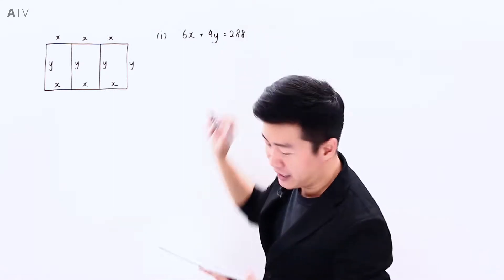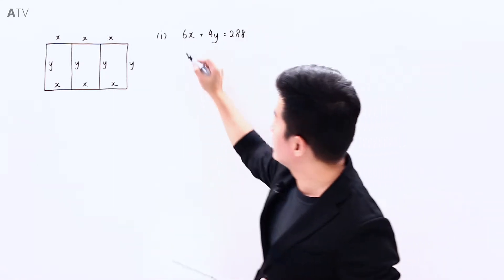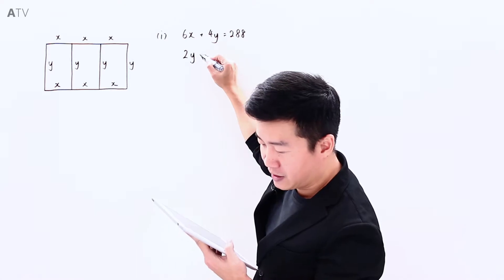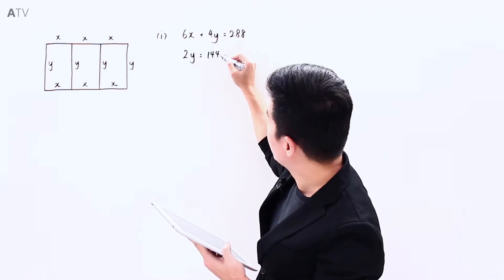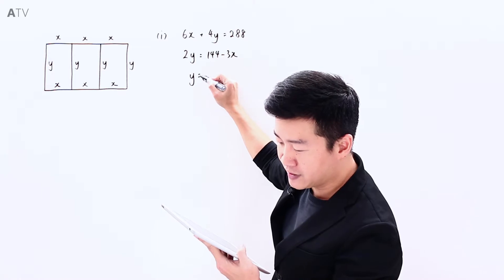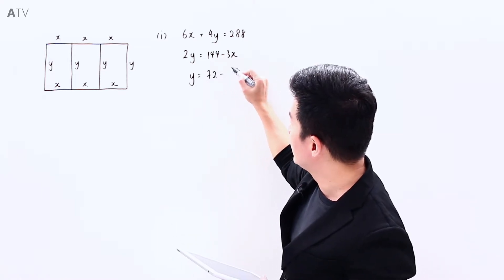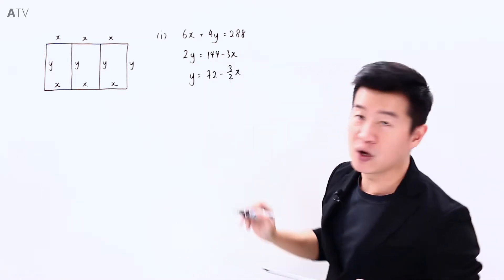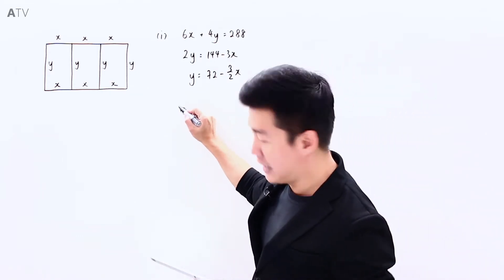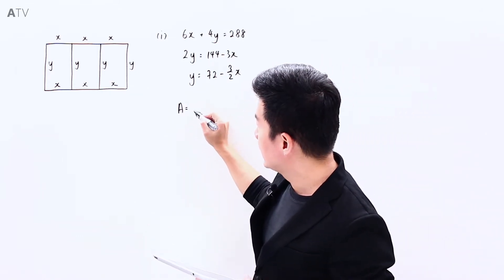This is 288, which means that 2y is going to be equal to 144 minus 3x. So y is going to be equal to 72 minus 3 over 2x.